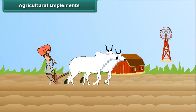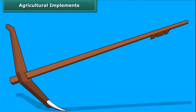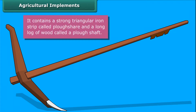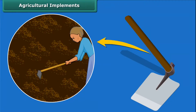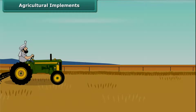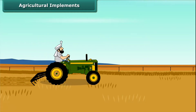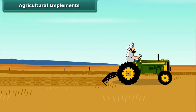Now look at this farmer — he is plowing the field using a plow made of wood. It contains a strong triangular iron strip called a plowshare, and the main part of the plow is a long log of wood called the plowshaft. Another tool used in plowing is a hoe, which is used for removing weeds and for loosening the soil. It has a long rod of wood and a strong, broad, bent plate of iron that works like a blade. Nowadays, plowing is done by a tractor-driven cultivator, which saves both labor and time.